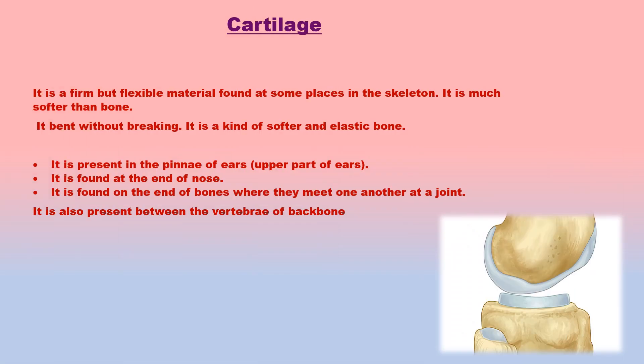Cartilage is a firm but flexible material found at some places in the skeleton. It is much softer than bone and can be bent without breaking — it is a kind of softer and elastic bone. Cartilage is present in the pinnae of ears, at the end of nose, and on the ends of bones where they meet at a joint. The smooth layer of cartilage reduces friction and allows bone ends to move easily over each other. Cartilage discs between vertebrae make the backbone flexible and absorb shocks when we run or jump.